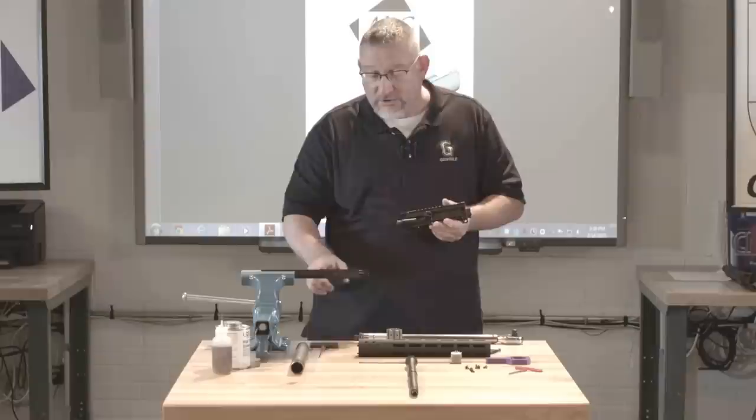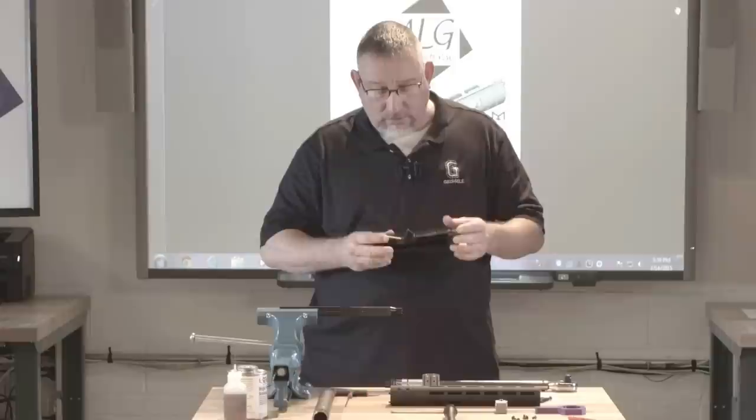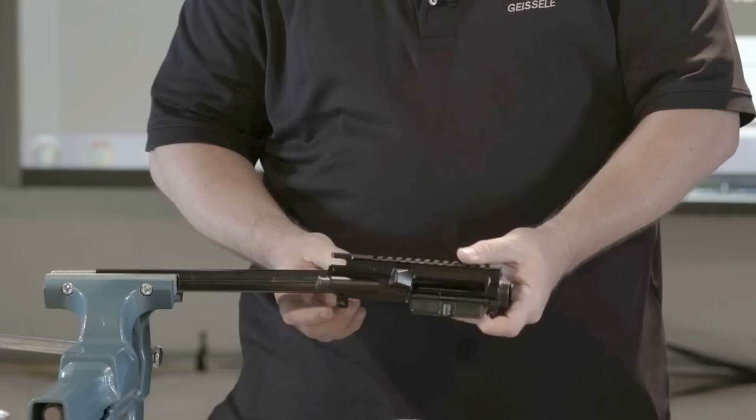Well my favorite tool is something called the Geissele Reaction Rod, which is this guy right here. It's made from 4140 chromoly steel, heat treated, centerless ground on the outside for a precise fit to your M4 carbine receiver. And makes working on your guns a snap.